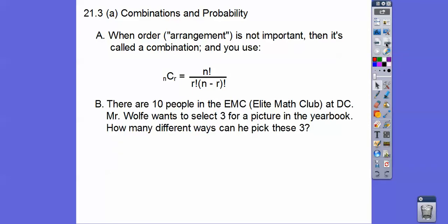Here's an example. There's 10 people in the elite math club at Del Campo. Mr. Wolfe wants to select 3 for a picture in the yearbook. Can you see order does not matter because he's just selecting three people for the picture? It's not like you're getting first place, second place, or third place. So order doesn't matter which three people.